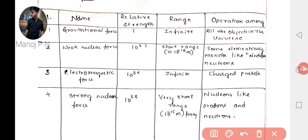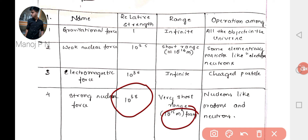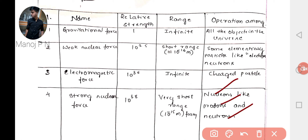Third, electromagnetic force is 10 to the power of 36 times stronger than gravitational force, has infinite range, and operates among charged particles. Fourth, the strong nuclear force is 10 to the power of 38 times stronger than gravitational force, has a very short range of 10 to the power of minus 15 meters, and operates among nucleons — protons and neutrons — in the nucleus.